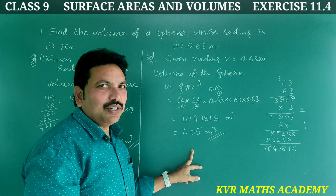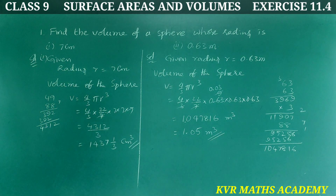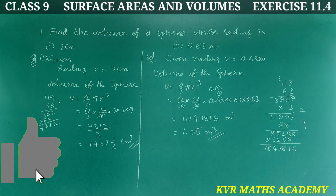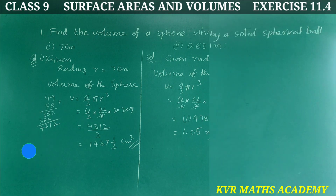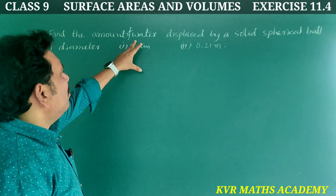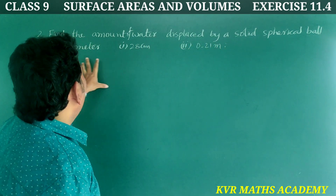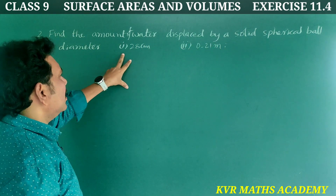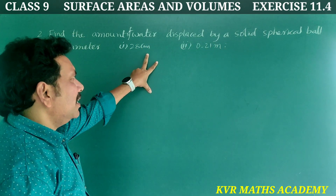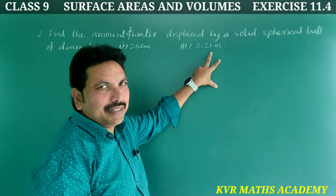Have you understood clearly? Next, the second question: find the amount of water displaced by a solid spherical ball of diameter 28 centimeters and 0.21 meters.